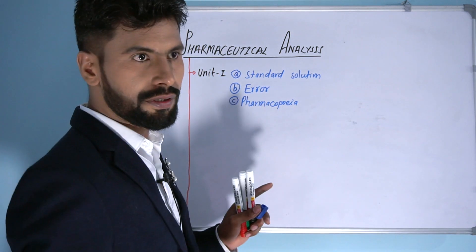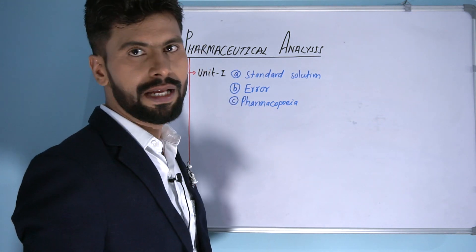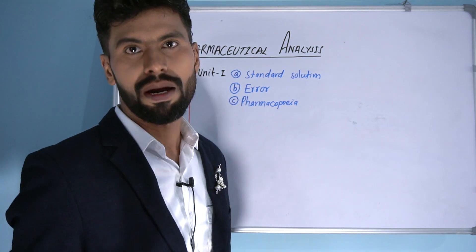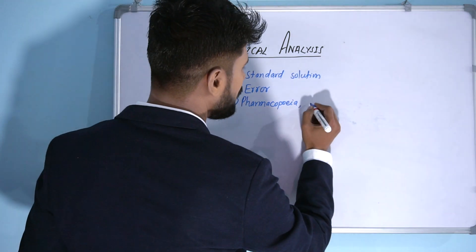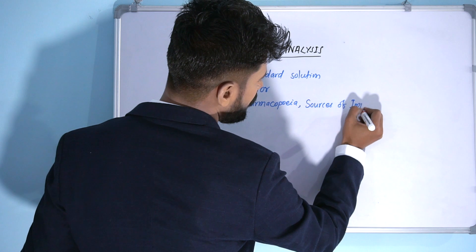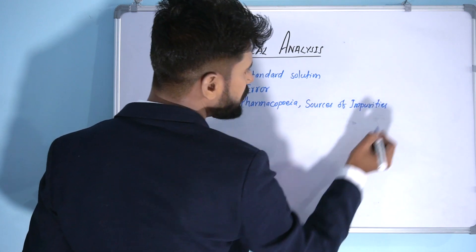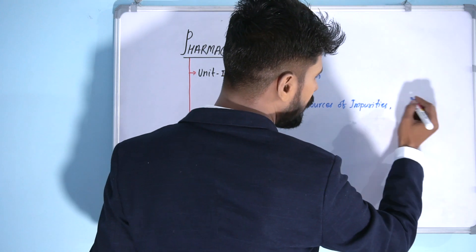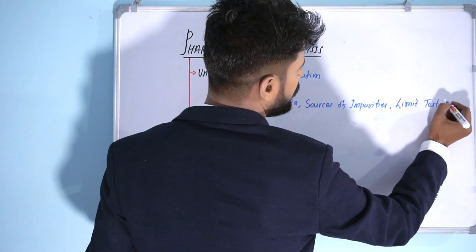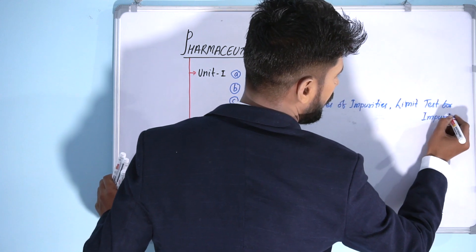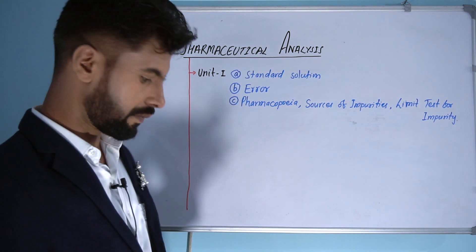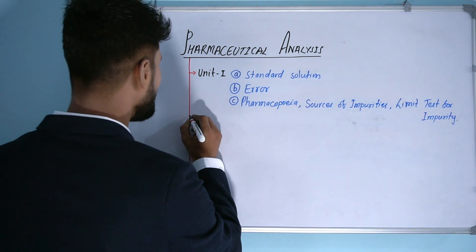The third topic in unit one is pharmacopoeia. You will also study pharmacopoeia in pharmaceutical inorganic chemistry and in detail in pharmaceutics one. Along with pharmacopoeia, we have sources of impurities, types of impurities, and limit tests for impurities. So these three chapters — standard solutions, errors, and pharmacopoeia with impurities and limit tests — make up unit one.